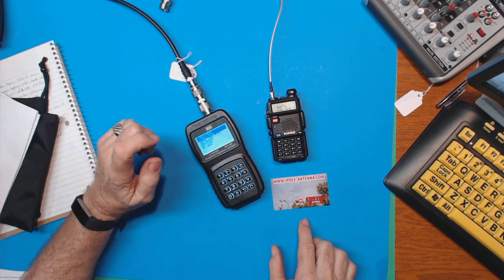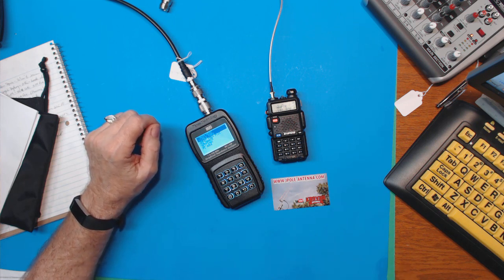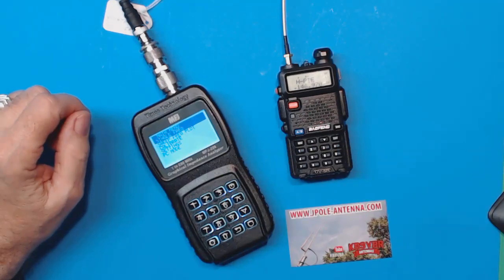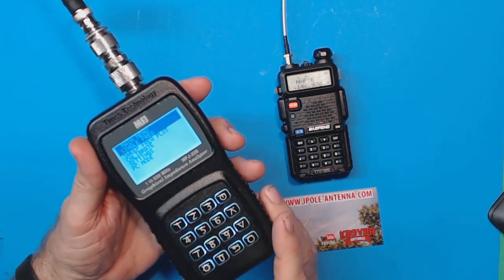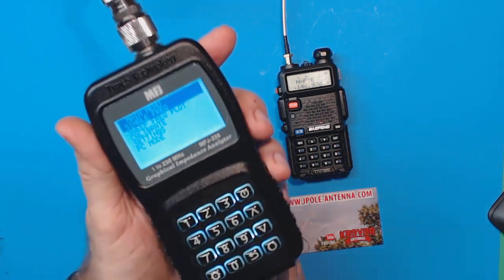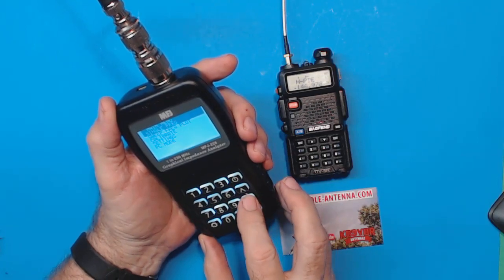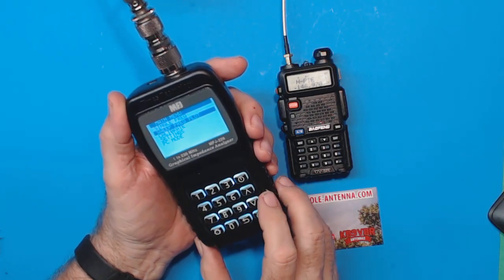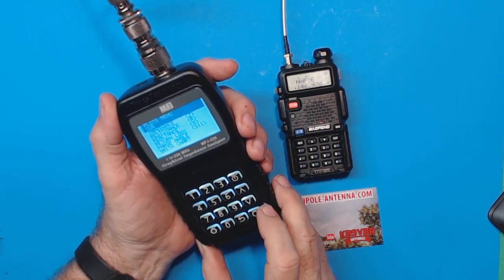So I have to use a couple of adapters to bring it into my analyzer. We're going to see what the SWR is on this antenna, so let me zoom in. I'll hold up the analyzer so you can see it. Now we're going to select sweep frequency plot.